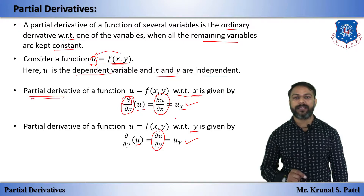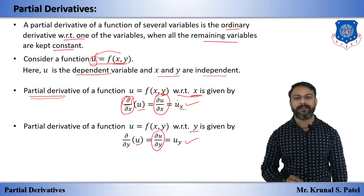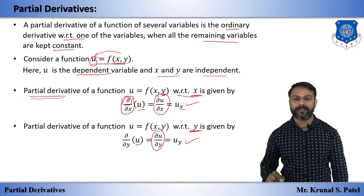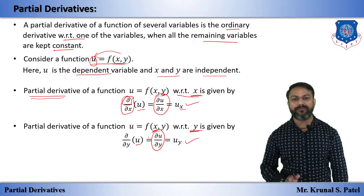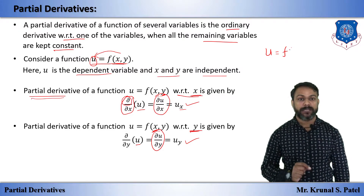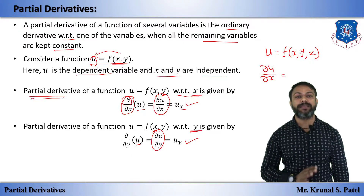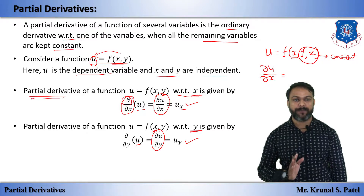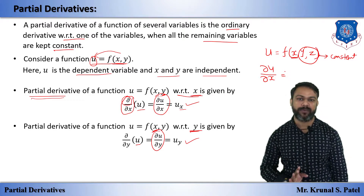When we differentiate u partially with respect to x, we keep y constant — we treat y as a constant. When we differentiate u partially with respect to y, we treat x as a constant. If there are three variables, u = f(x, y, z), and you differentiate with respect to x, then both y and z are treated as constants. You concentrate on x only — y and z become constant. This is the core concept of partial derivative.